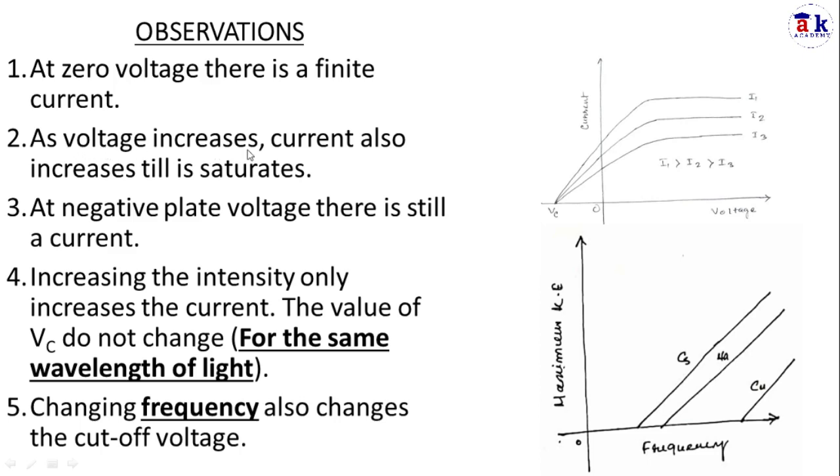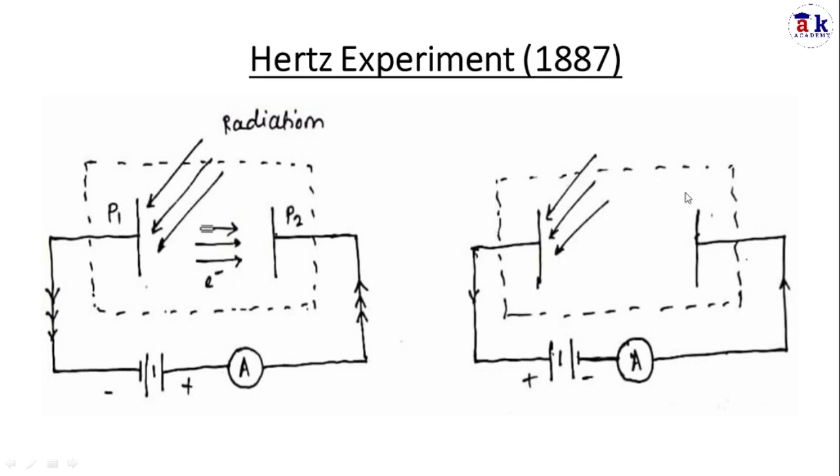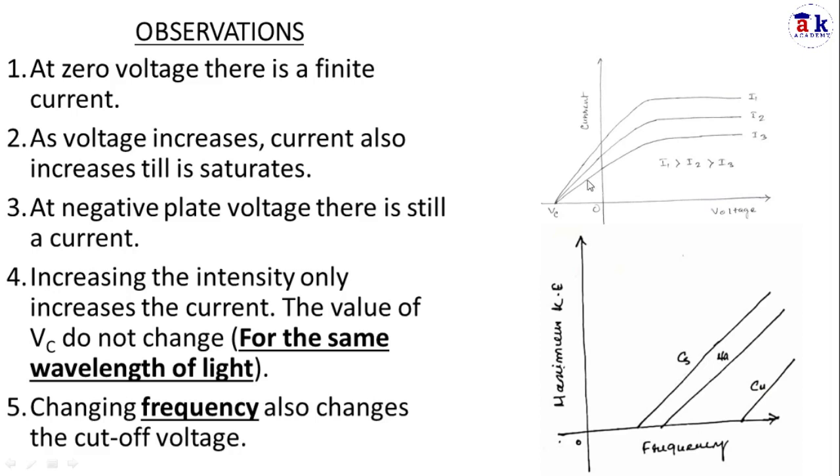The second observation is as the voltage increases, current also increases till it saturates. The third observation is at negative plate voltage there is still current because the electrons have kinetic energy sufficient to cross this barrier.